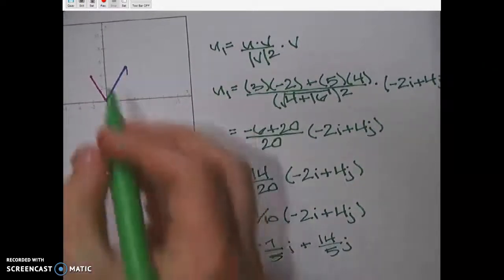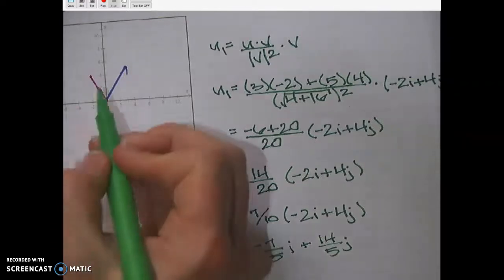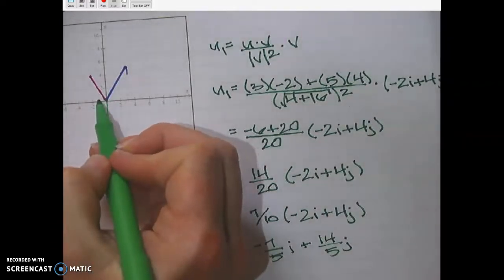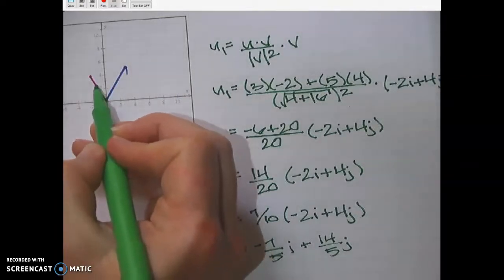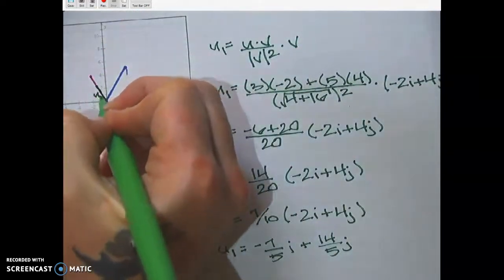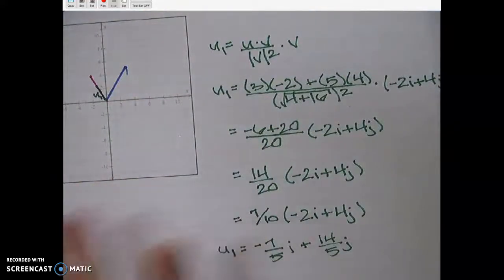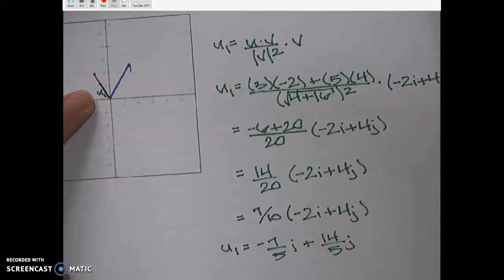So let's see. Negative 7 fifths i, so that's going to be negative 1 in a little bit, right? And then 14 fifths is almost 3, so negative 1 in a little bit to almost 3. Let's see, where's 3? We'll be good with that for u1. Again, it's not going to be perfect because we don't have all that fractional stuff written down, but it's good to just know, okay, v is in the second quadrant here, and so u1 should also be in the second quadrant if it's parallel, right?